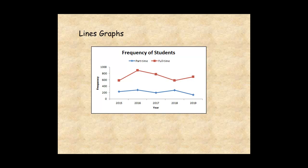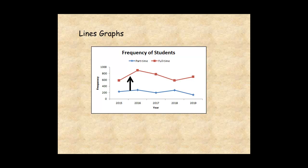A multiple line graph is a kind of graph that is plotted with two or more lines. It is used to compare sets of data values. In this case, the enrollment of part-time students is compared to full-time students over a five-year period. After an increase in 2015, full-time enrollment declined for two years. However, in the most recent year, enrollment is increasing again. Part-time enrollment over five years is trending slightly downward.